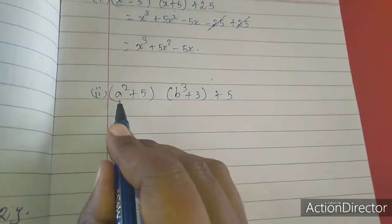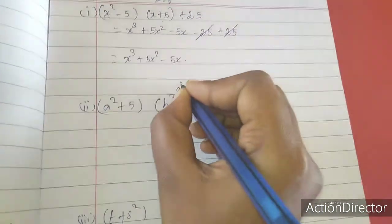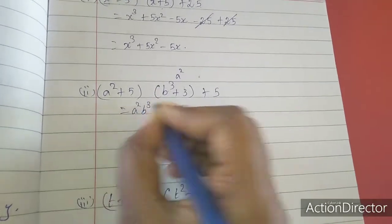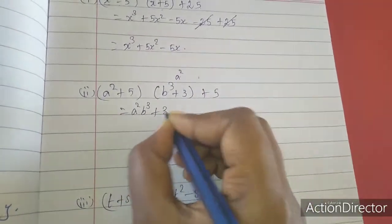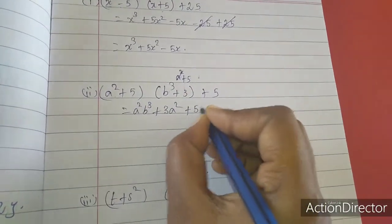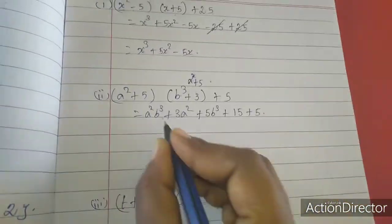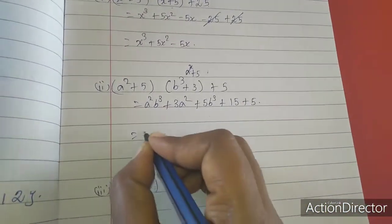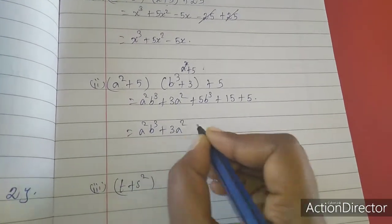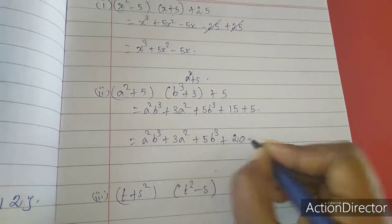Now second sum: a squared plus 5 into b cubed plus 3 plus 5. The result is plus 5b cubed plus 15 plus 15 plus 5. This is the answer for the second sum.